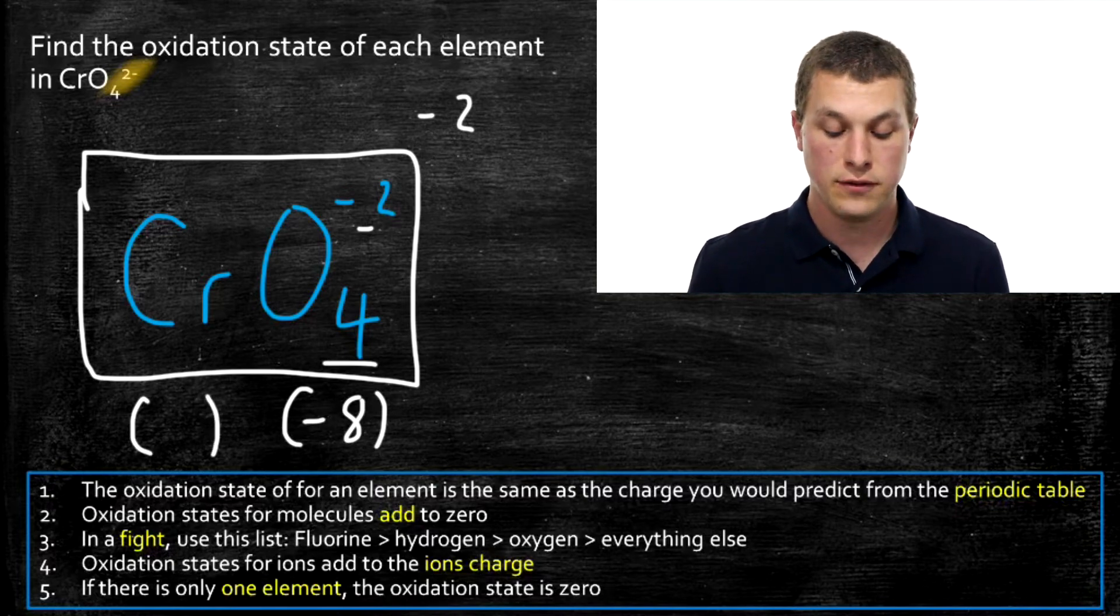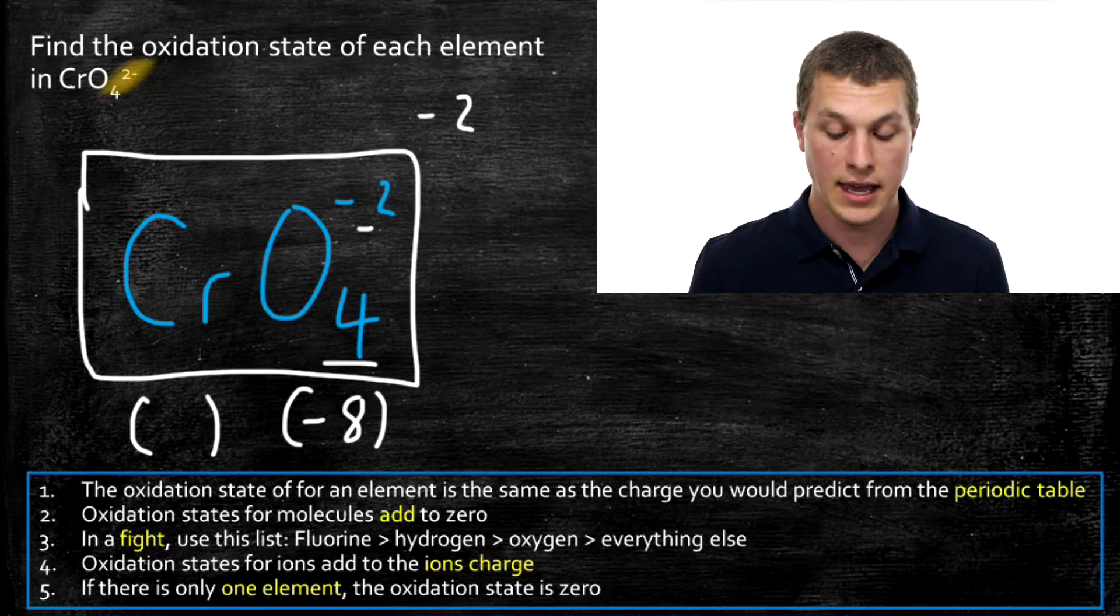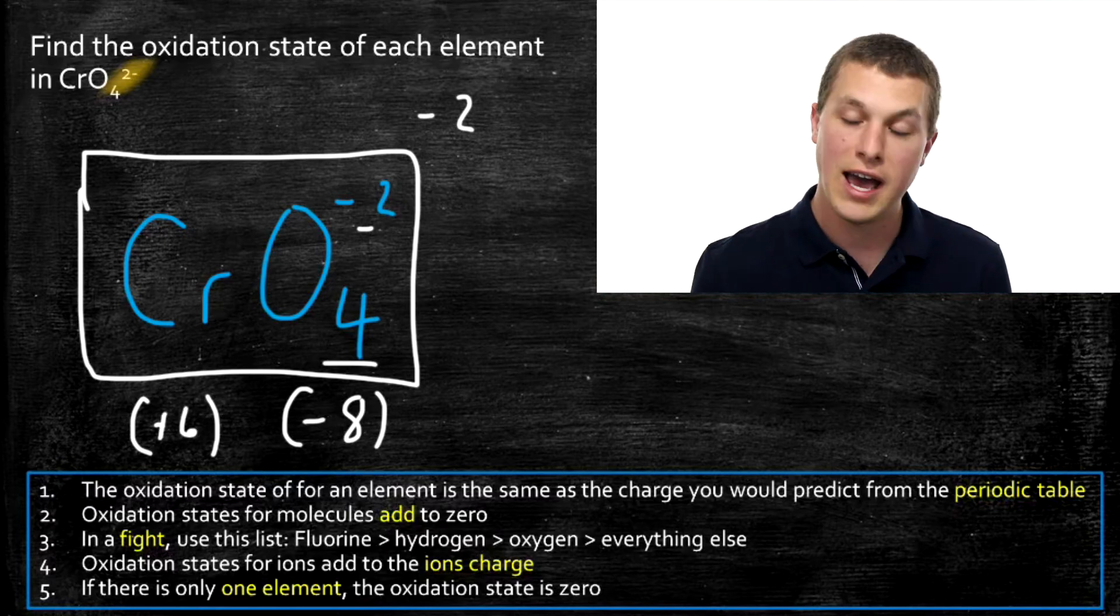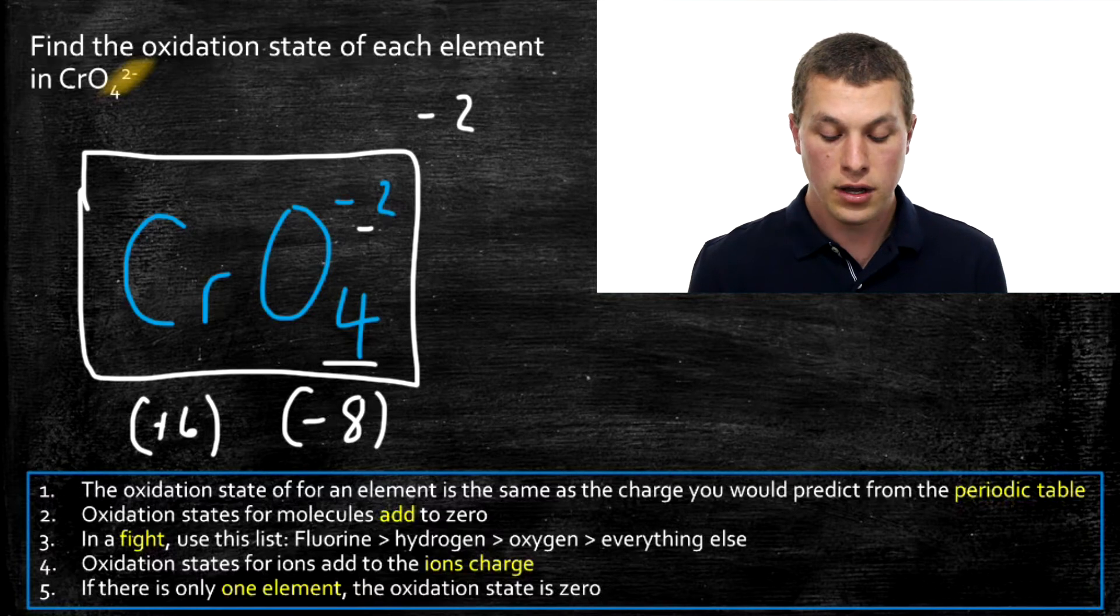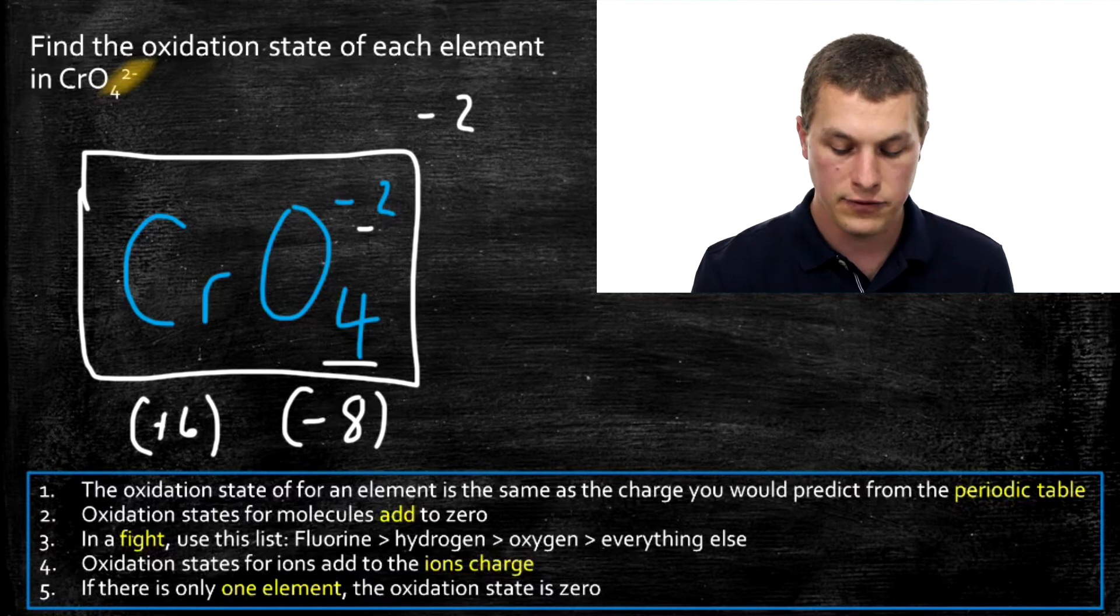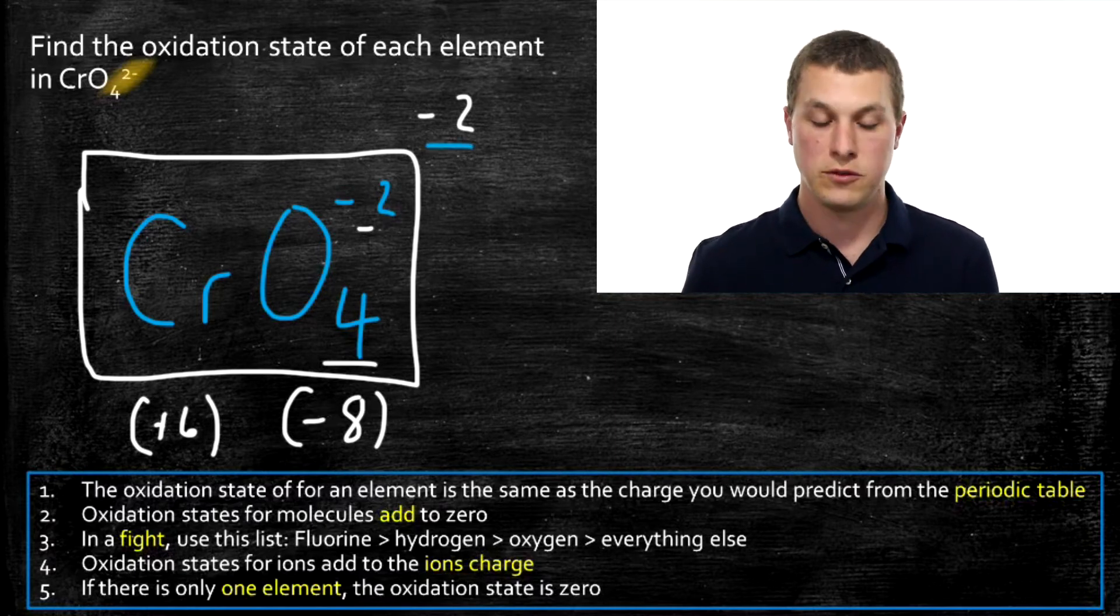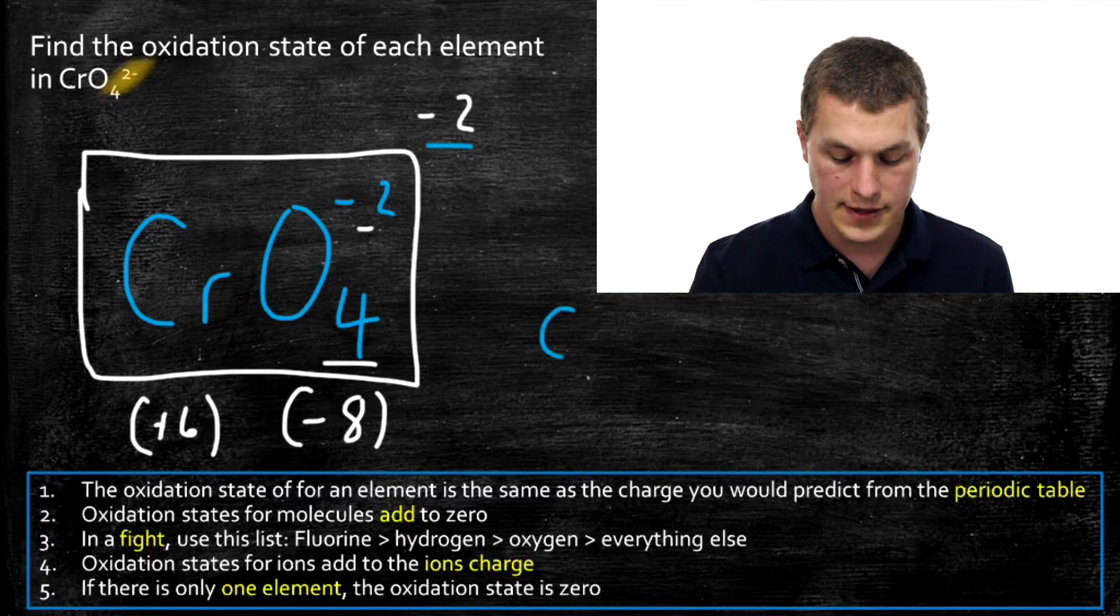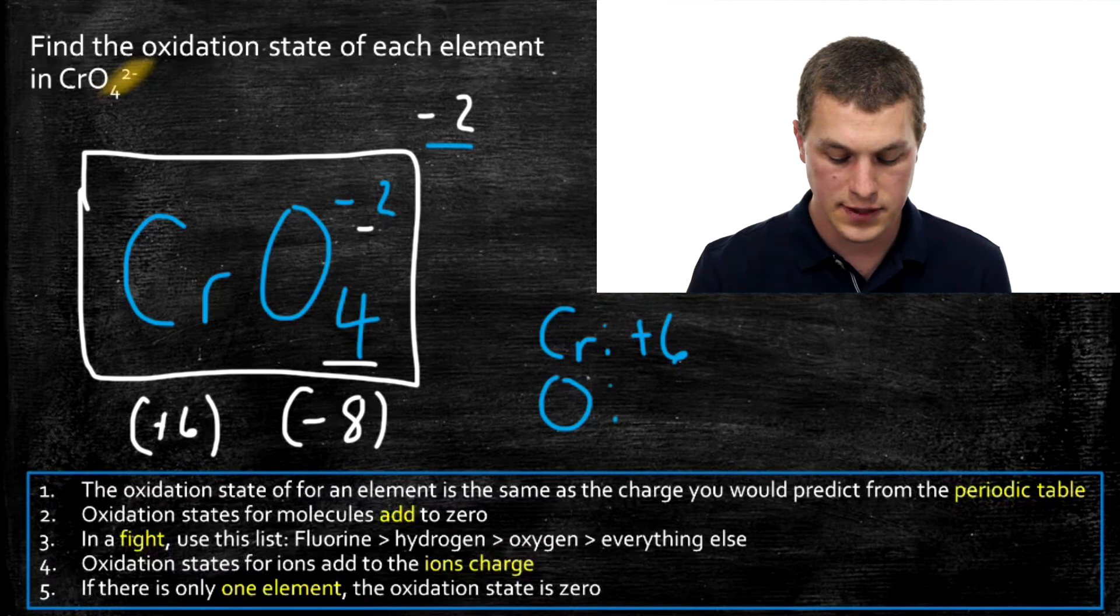Then we need to think about what oxidation state does that give us for chromium. The question you can ask yourself is what minus eight gives me minus two. And the answer to that is plus six. If I take a positive six and I subtract eight, it's going to give me back out my negative two. That's how I know chromium is plus six. Chromium has an oxidation state of plus six, and oxygen has an oxidation state of minus two.